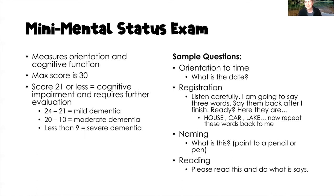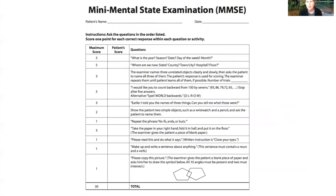Sample questions on the MMSE include orientation questions such as 'What is the date?' and 'Do you know where you are?' Registration involves saying three words and having the client repeat them back. Naming involves holding up a common object, such as a pen, and asking what it is. Reading involves having the client read and follow a written instruction — for example, 'Take off your socks' or 'Turn on the TV.'